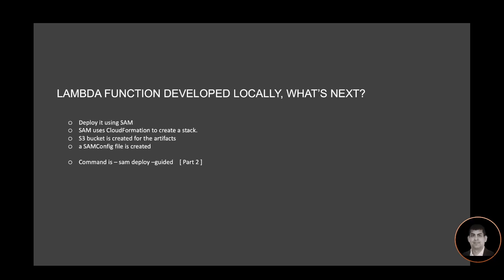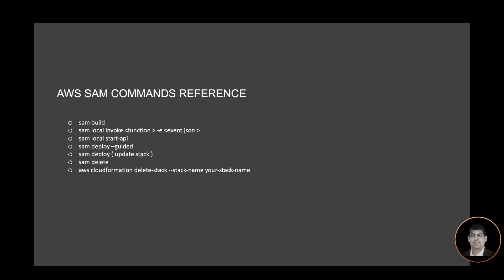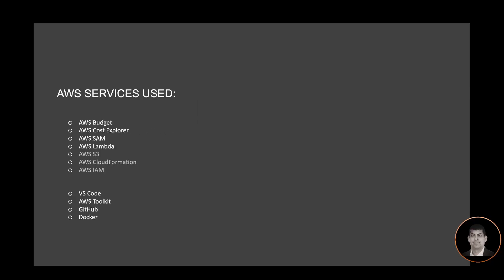Lambda function developed locally — what's next? Next I will deploy it using SAM. SAM uses CloudFormation; an S3 bucket is created for the artifact and a SAM config file is created. Here is an AWS SAM command reference with key commands: the build command, local invoke, 'sam local start-api', the deploy command, and 'sam delete'. AWS services used so far: AWS Budgets, AWS Cost Explorer, AWS SAM, and AWS Lambda. While I have not used AWS S3, AWS CloudFormation, and AWS IAM explicitly, these services get used by the AWS SAM framework under the hood.